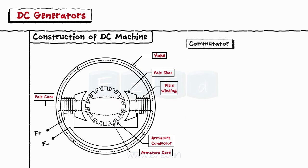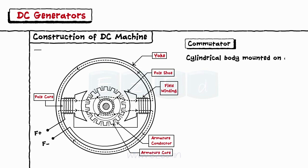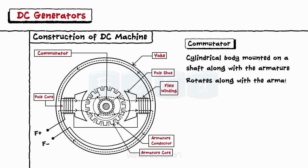A commutator is a cylindrical body mounted on a shaft along with the armature, thus forming a single body. Hence, the commutator also rotates along with the armature.